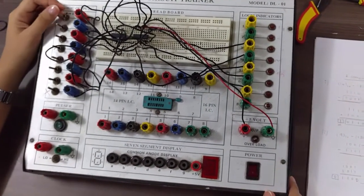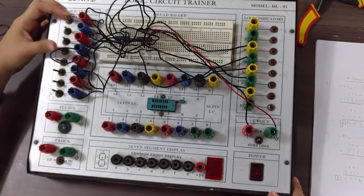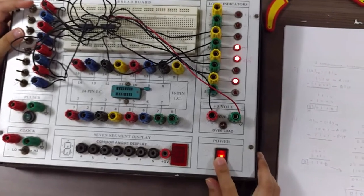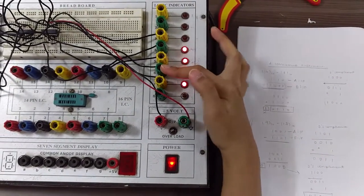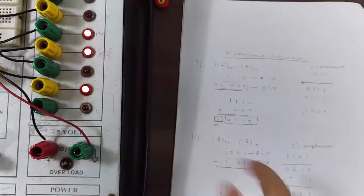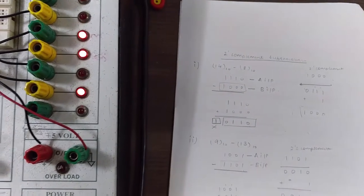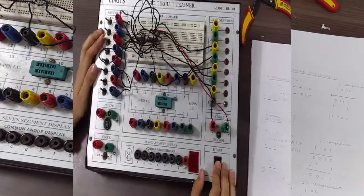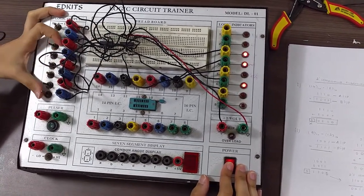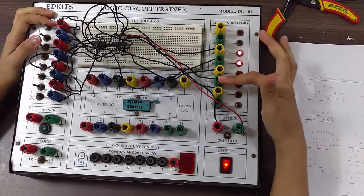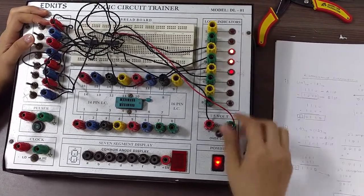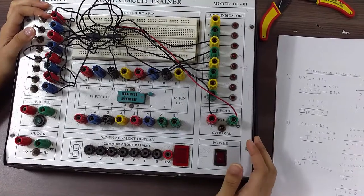Now let's check the output. A input is 11110 and B input is 10000. Now let's check the output. This is the answer we obtain after taking the two's complement. Hence this subtractor is verified.